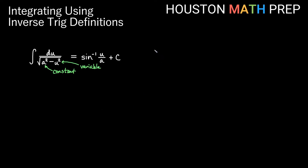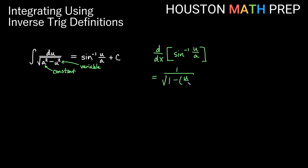We're going to show where this comes from using the derivative formula. If we take the derivative of inverse sine of u over a — leaving off the plus c since the derivative of a constant is zero — the derivative of inverse sine of something is 1 over the square root of 1 minus that something squared, so it's 1 minus (u/a) squared. The chain rule then gives us times the derivative of the inside, which is 1 over a times u prime.